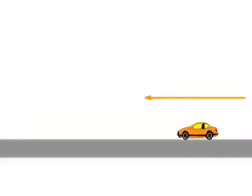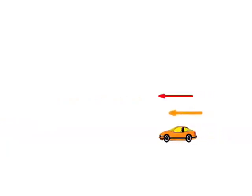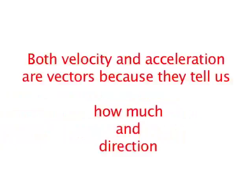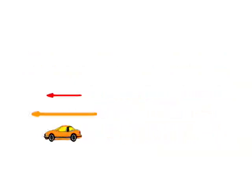This car is traveling twice as fast, so the vector is twice as long. The orange vector is increasing in length because the car is speeding up. Both velocity and acceleration are vectors because they tell us how much and direction. The red arrow shows the acceleration.